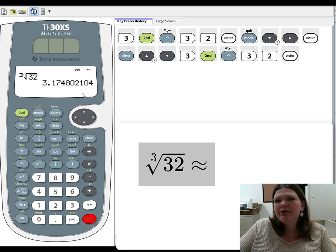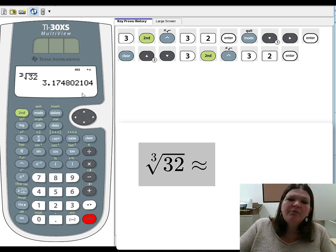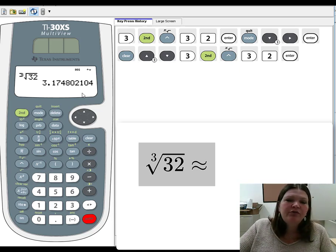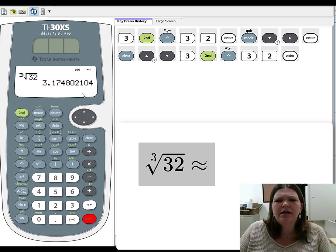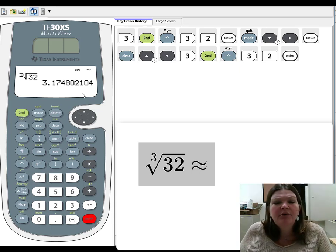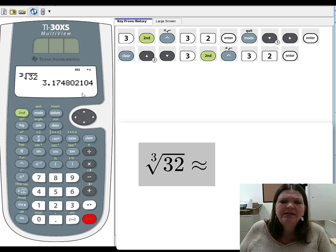So even though the way you input it when you're in classic mode versus math print mode varies for cube root, both of them give you a decimal approximation, which is a little weird because it's not consistent. It's not the same with square root, right? Square root sometimes gave us a decimal approximation, sometimes gave us an exact answer, depending on what mode we're in.